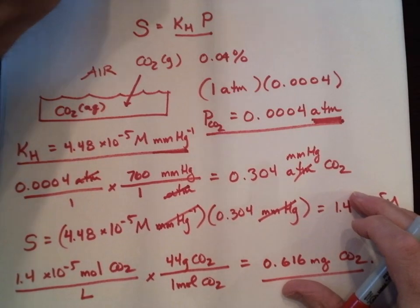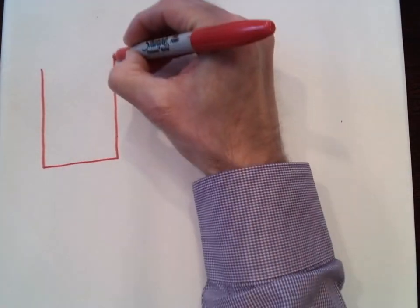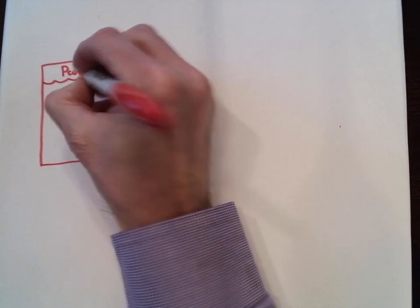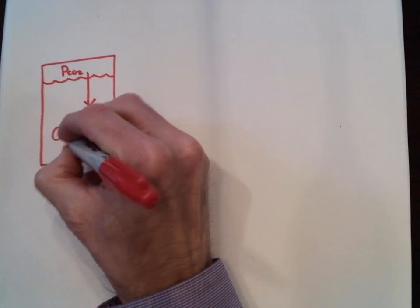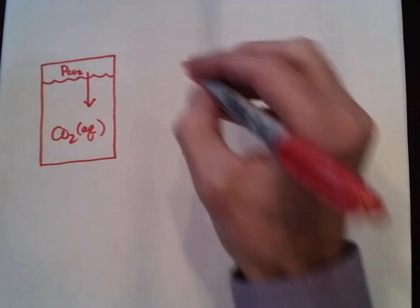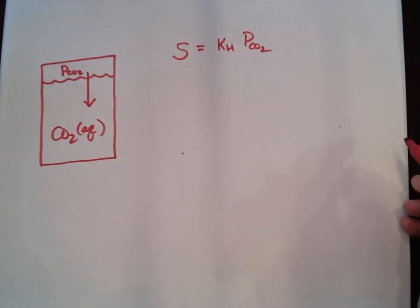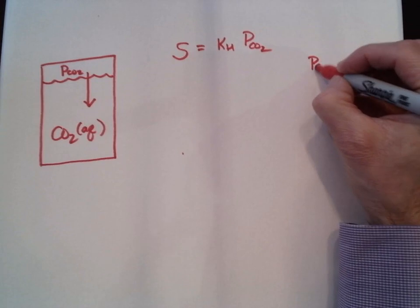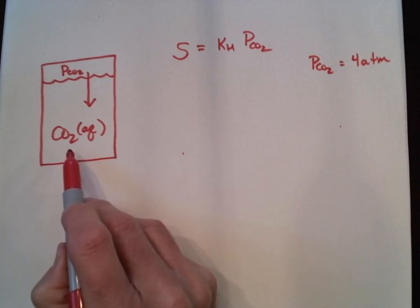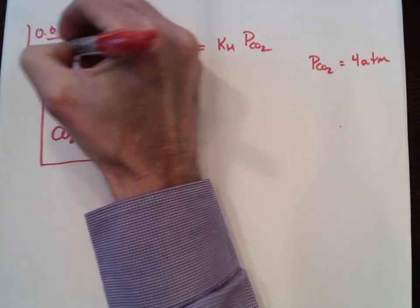Let's take this one step further and see how much carbon dioxide we'd expect dissolved in a bottle of soda pop. In a can of soda, we pump a high pressure of CO₂ into the headspace to drive a large amount of carbon dioxide into the fluid — so the pop will pop. Our equation is again: solubility equals Henry's Law constant times the pressure of CO₂. In cans of soda, the PCO₂ is roughly 4 atmospheres. We previously found 0.6 milligrams of CO₂ per liter in water exposed to the air. Let's see how much is in a can of soda pop.